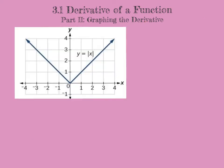This third example is a piecewise function. This absolute value function is actually a piecewise: when x is less than zero, it is the graph of y = negative x, and when x is greater than or equal to zero, it's the graph of y = positive x. So this function f is really a piecewise function, and the two pieces meet at the origin.